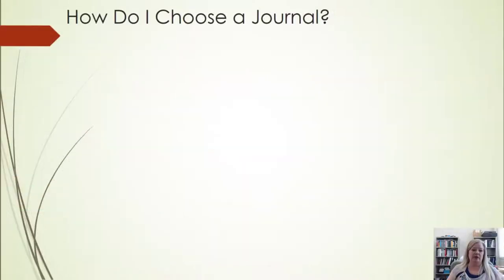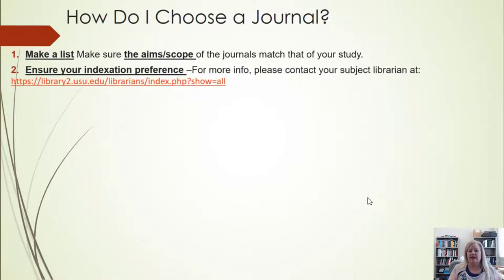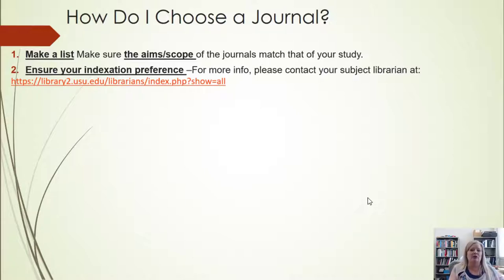Along with being aware of predatory journals, let's take a deeper dive into how to choose a journal. Go to several journals — you might think you know where you want to publish, but don't be afraid to look at several. Make a list of the aims and scopes of those journals and make sure they match your area of study. Ensure that your indexing preference matches the indexing of the journal. Indexing is highly relevant in science and STEM journals, and even in humanities journals — English indexing, language indexing — those are very relevant. If you're unsure about your indexing, visit with your subject librarian.